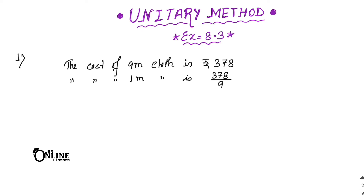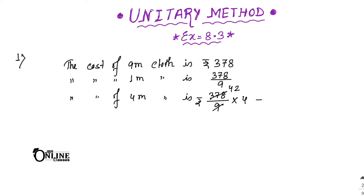Now the last line: find the cost of 44 meters of cloth. The cost of 4 meters cloth — since we go from smaller to greater, we multiply. So 378 divided by 9, which gives 42, then 42 into 4 equals 168. So rupees 168 is your answer.